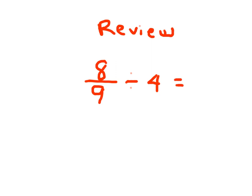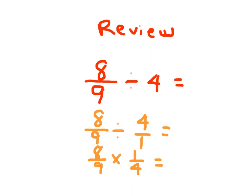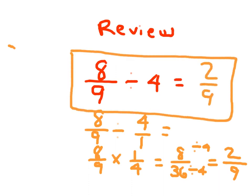Let's go ahead and review. We have 8 ninths divided by 4. That's 8 ninths divided by 4, and 4 can be rewritten as 4 over 1. When we're dividing fractions, we're multiplying by the inverse. So we have 8 ninths times 1 fourth. 8 times 1, which is 8, and 9 times 4, which is 36. We just multiply the numerators and denominators. Finally, we simplify — both are divisible by 4. So 8 divided by 4 is 2, and 36 divided by 4 is 9. Remember, when you can simplify your answer, you should. 8 ninths divided by 4 is equal to 2 ninths.